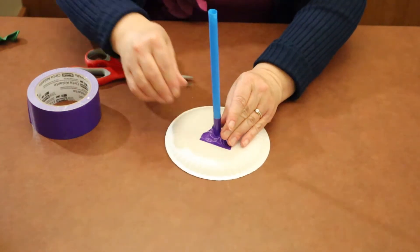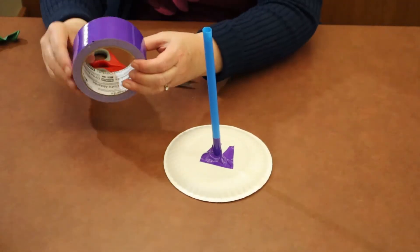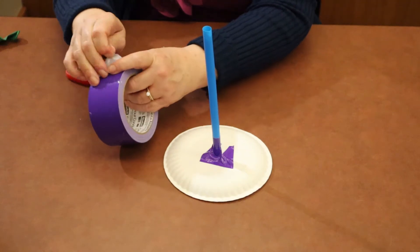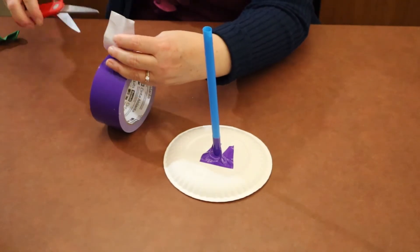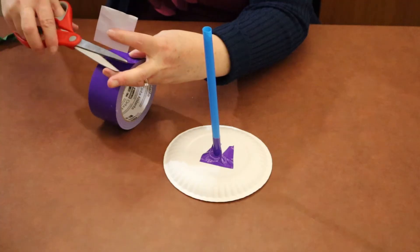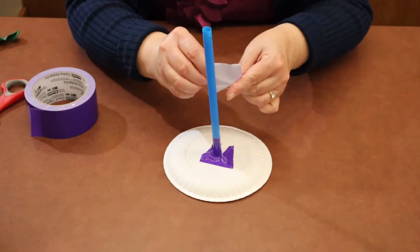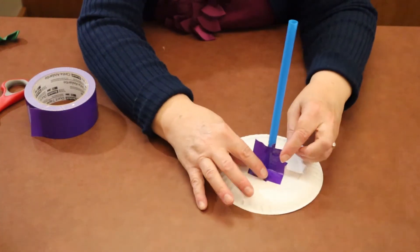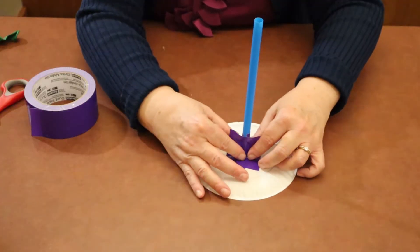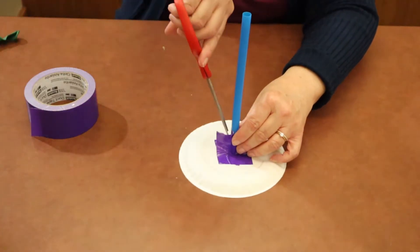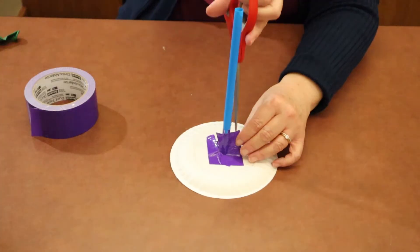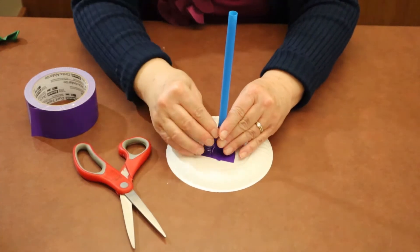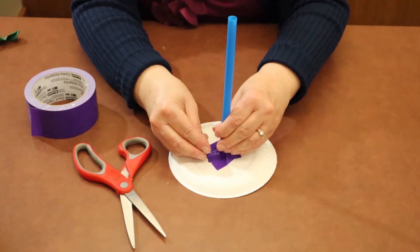Why we're doing this is number one, to make the straw stable. Plus, it's going to eliminate any air leaks from the balloon and help your hovercraft work better. Continue putting your pieces of duct tape on the plate and the straw and cut some little pieces. It seemed to work better for me to do that.